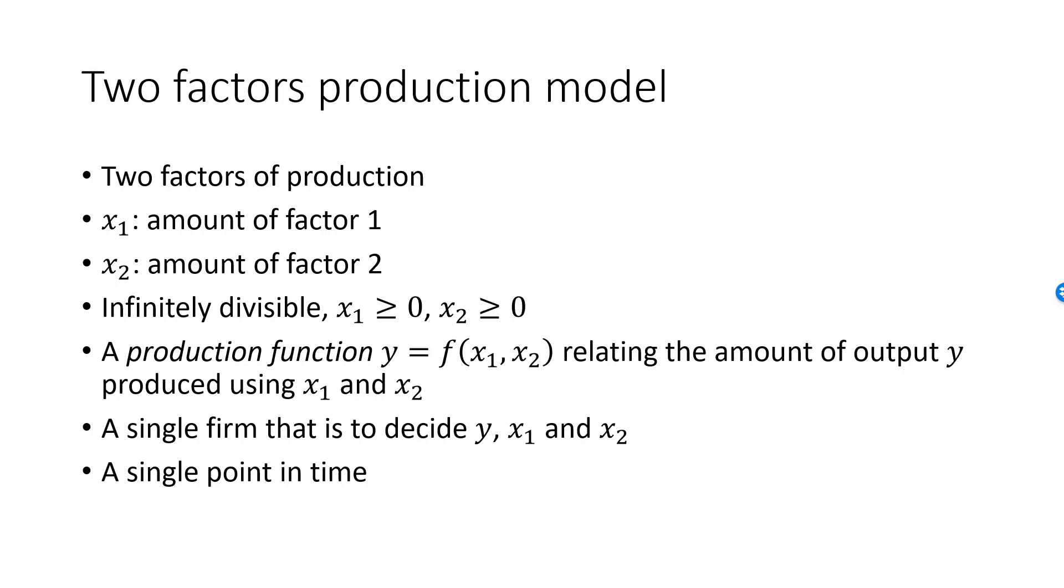There are many similarities between the two-factors production model and the two-goods consumption model. In the two-goods consumption model, we had a single consumer that had to decide on how much to consume of two goods. There was a utility function from which we could determine the level of utility from the consumption choice. The two-factors production model is a very similar model where the goods are replaced by factors of production and the utility function is replaced by the production function.